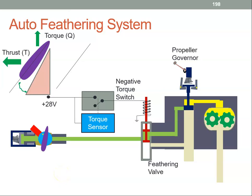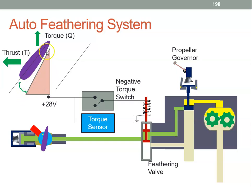In this video we want to talk about the auto feathering system if it's installed. Normally when the aircraft is flying along, the propeller is producing positive thrust and positive torque and we have a positive angle of attack. This is the velocity vector, this is the propeller speed vector omega r, and this is the relative airflow.